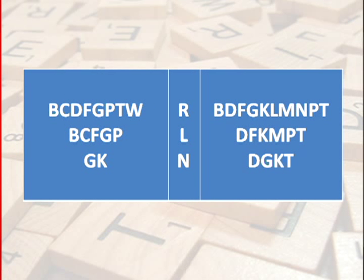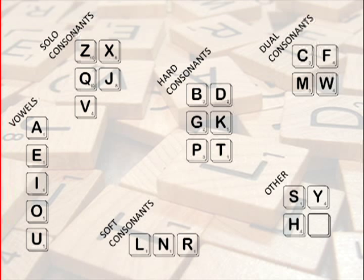Common consonant pairings containing these soft values are seen here. Tiles B, D, G, K, P, T also emerge as hard consonants. Furthermore, some can be used as soft and hard, such as C, F, M, and W, while others have a tendency not to pair up at all, such as Z, X, Q, J, and V.